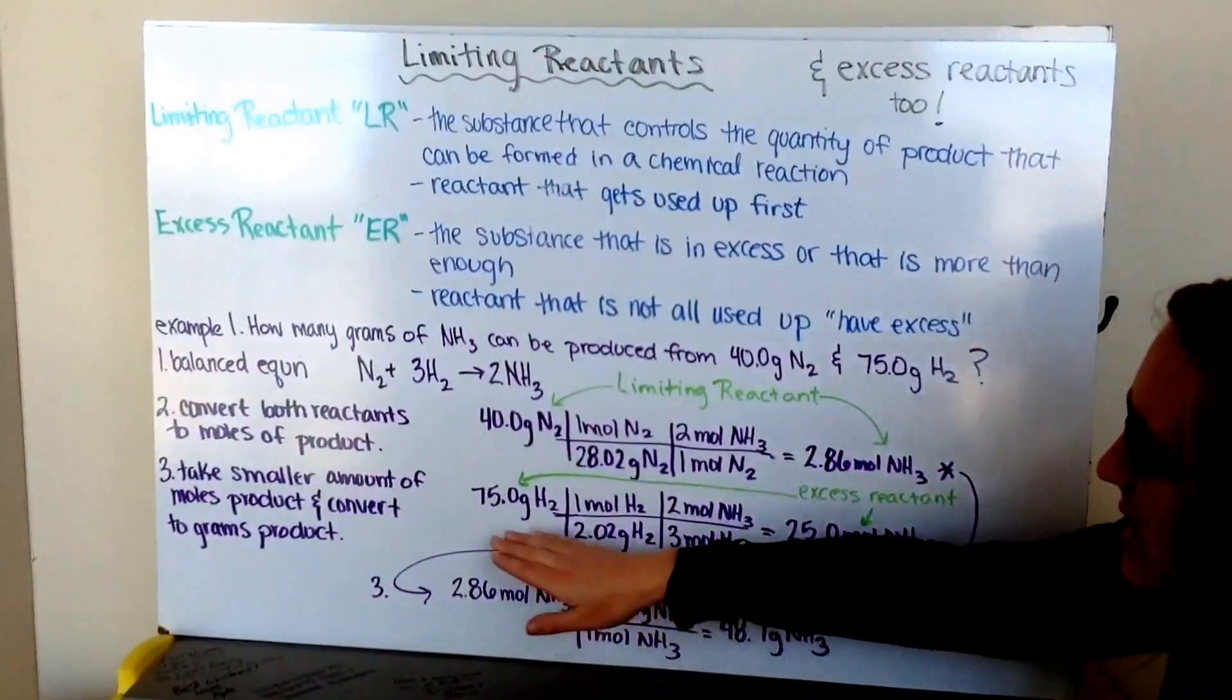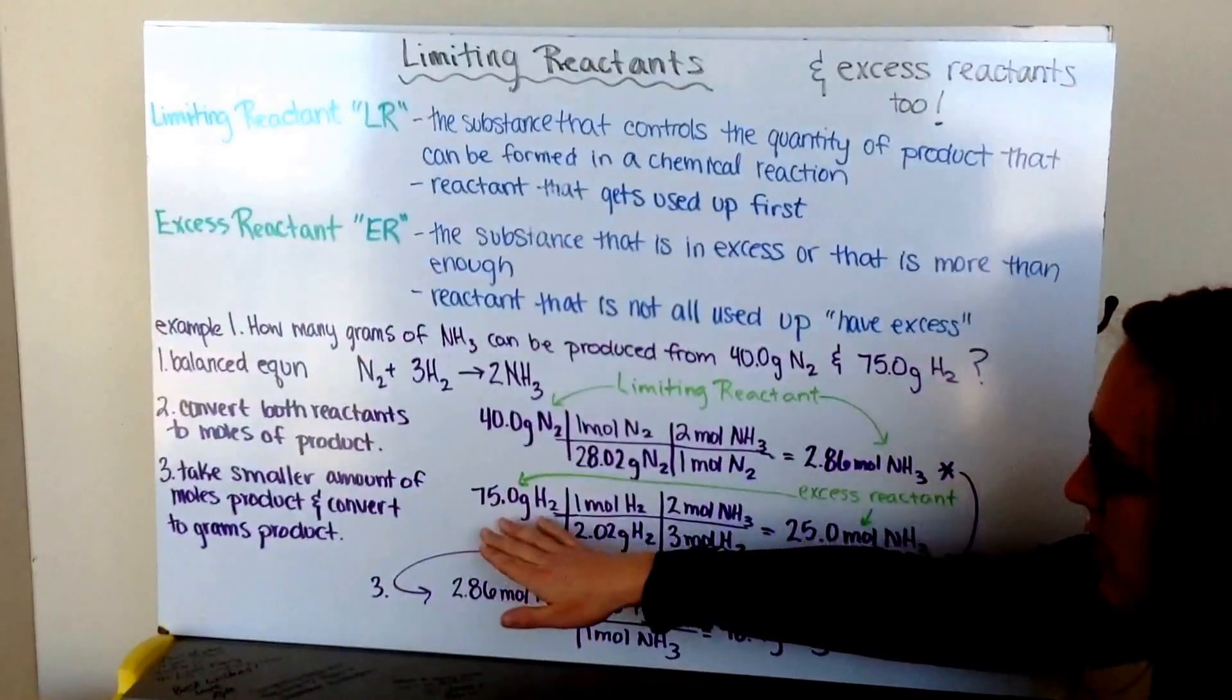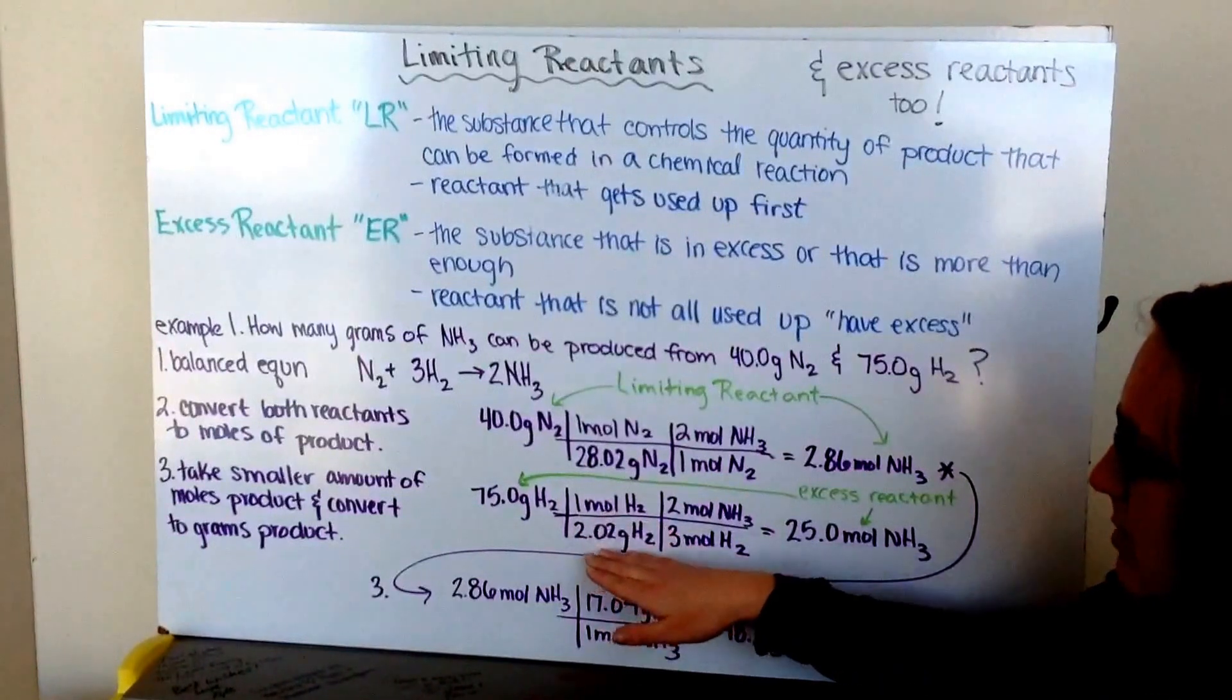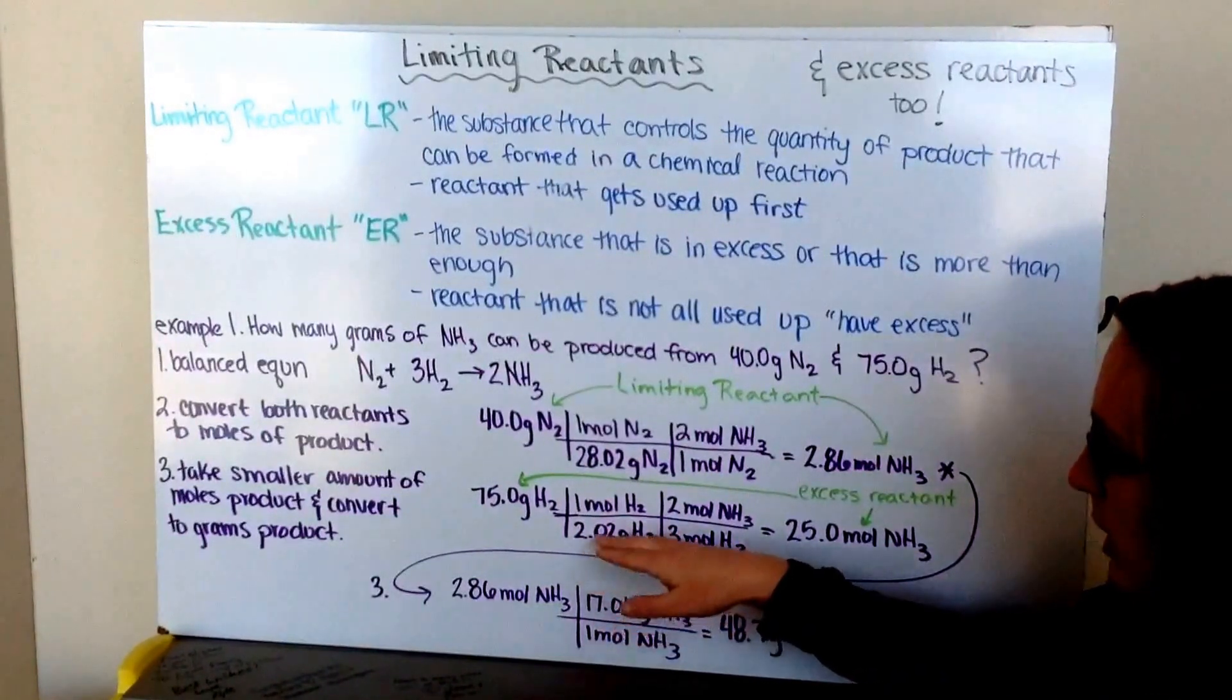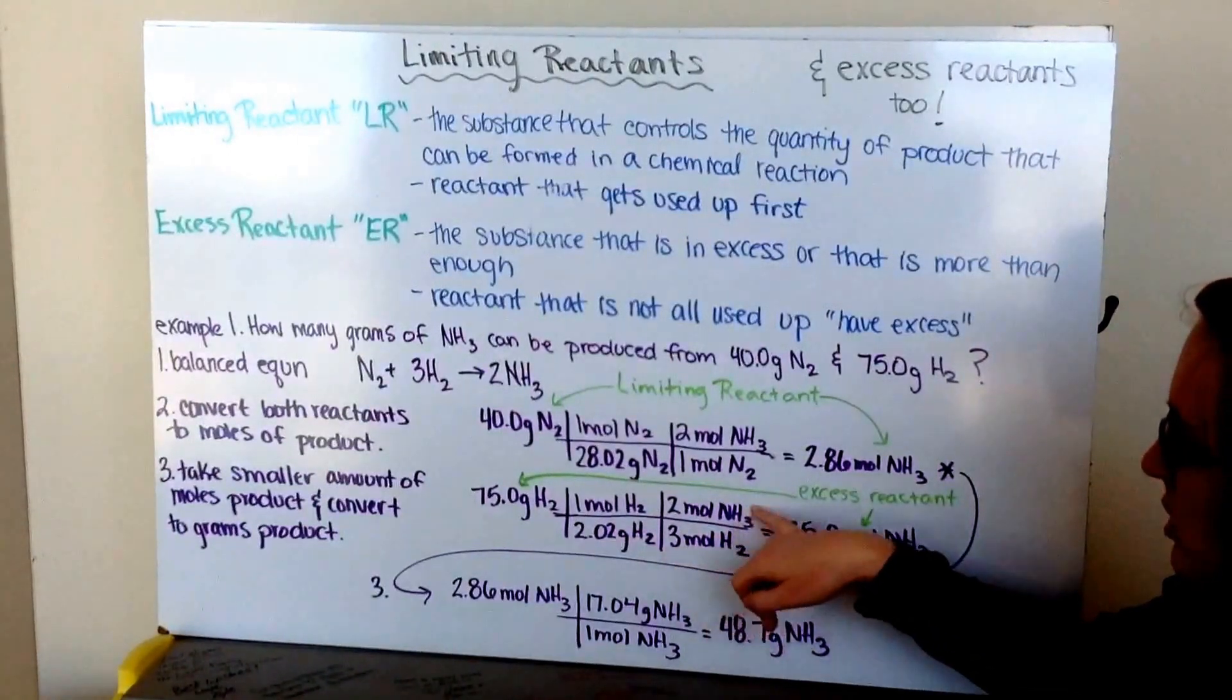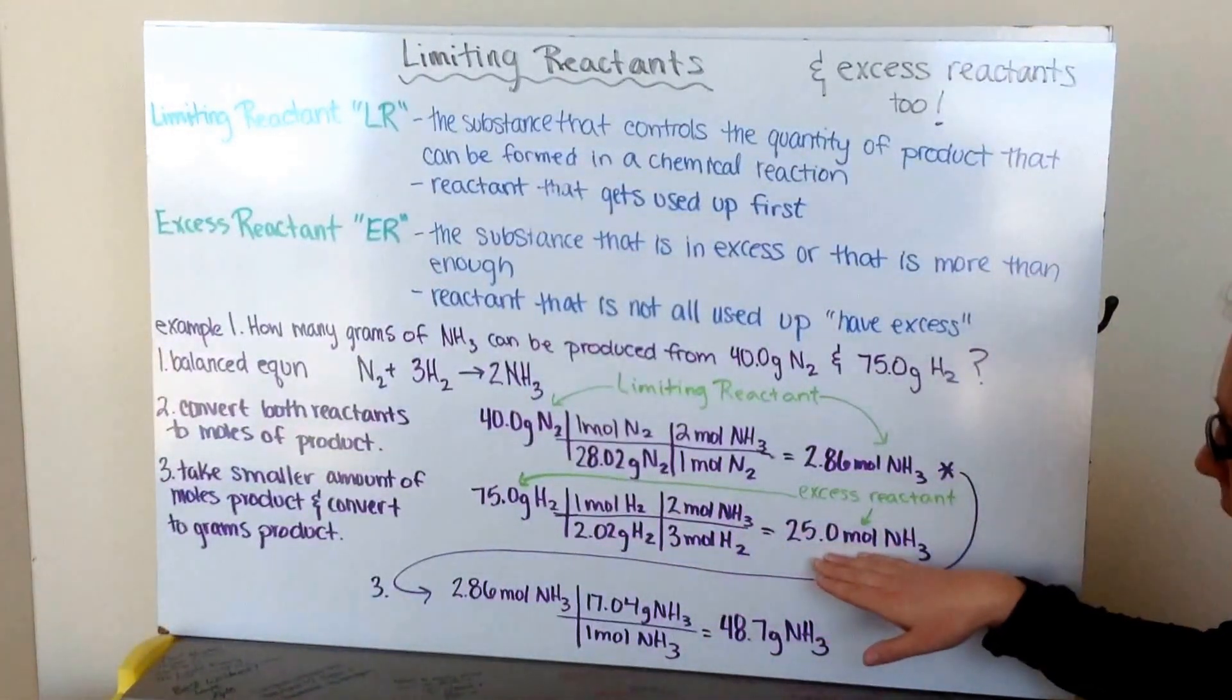Then, I do the same thing for my hydrogen. Take my 75 grams of hydrogen, convert from grams to moles via my molar mass of 2.02 grams per one mole of hydrogen, and then my mole to mole ratio of hydrogen to ammonia to determine how many moles of ammonia I'd make.